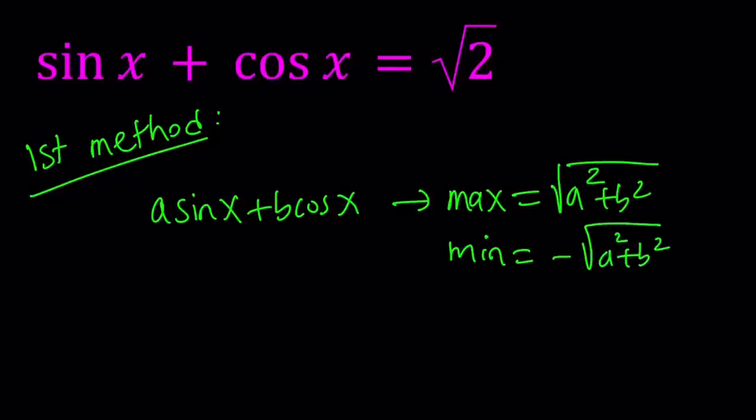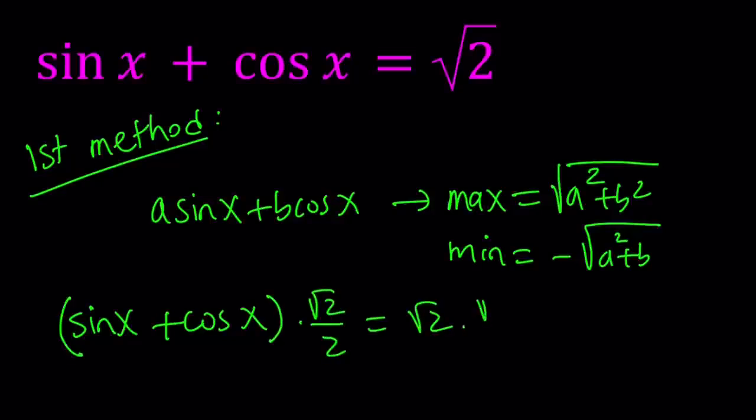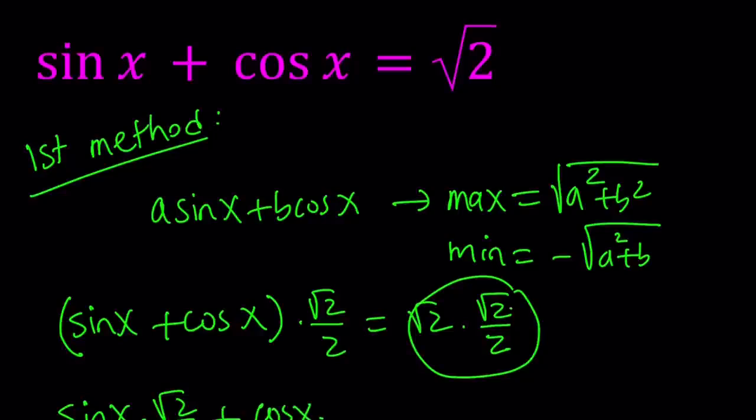But let's leave it aside and solve this problem. So I'm going to multiply this expression by square root of 2 over 2 and you're going to see why in a little bit. When I multiply on the right hand side this becomes 1 because root 2 times root 2 and I'm going to distribute this. Sine x times root 2 over 2 plus cosine x times root 2 over 2 equals 1.